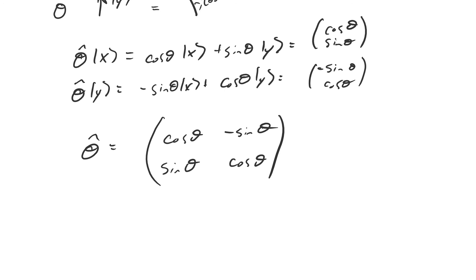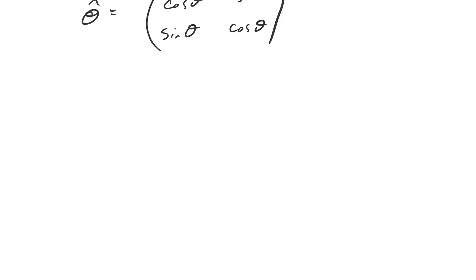You don't have to bother memorizing where the cosines go, where the sines go, or which terms have a negative sign — you can just go through this derivation each time you need this matrix. So we've talked about how to officially represent vectors and how to officially represent linear transformations as matrices. Now I want to look at how to carry out the application of a linear transformation on a vector using matrices and column vectors.